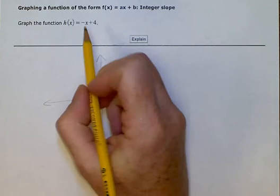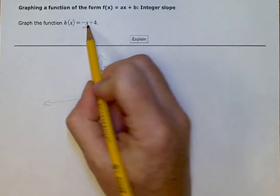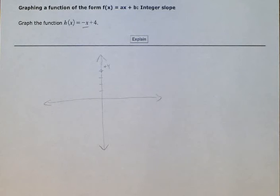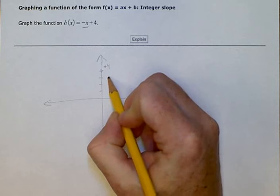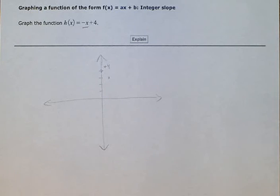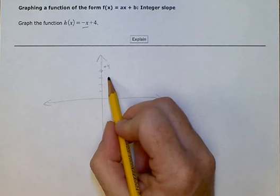This number in front of x is a negative 1. There's nothing there, we know that it's a 1. So negative 1 slope means we're going to go down 1 and over 1 to give us a slope. We can do it again if we want to get to the third point. Down 1 over 1.